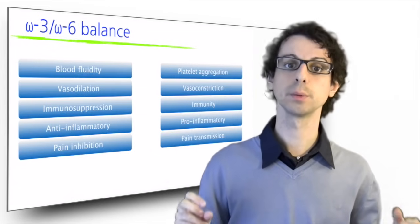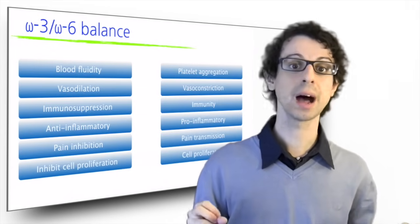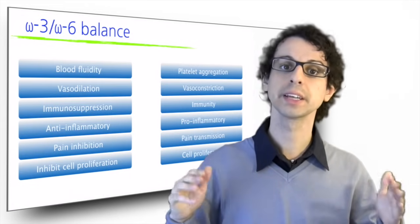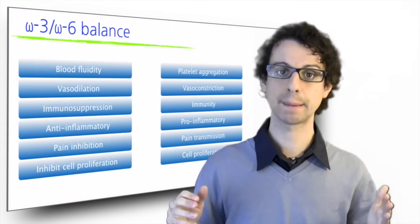Some eicosanoids promote cell proliferation, some others inhibit it. Controlled cell proliferation is necessary so that our body can grow, develop, and repair damaged tissues.